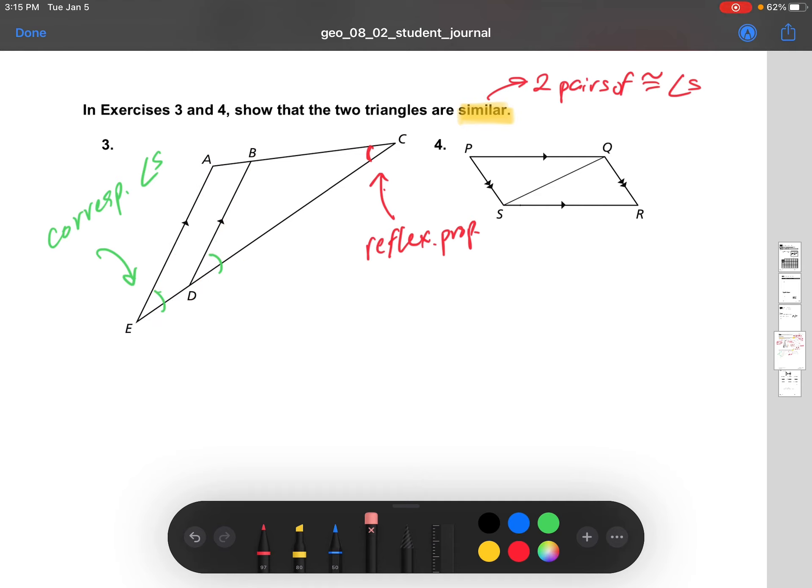All right, so if we redraw these triangles, let's do my best here. Okay, so here's the big triangle, A, E, C. And then there's the smaller triangle, B, D, C.